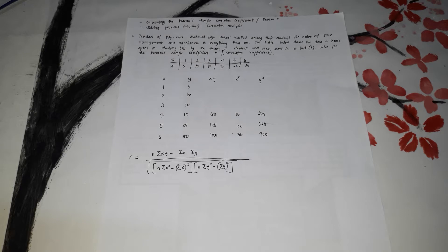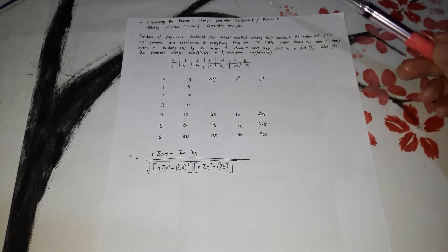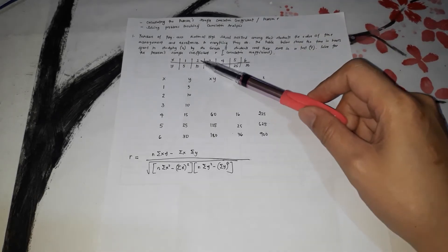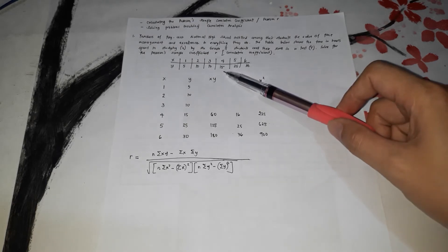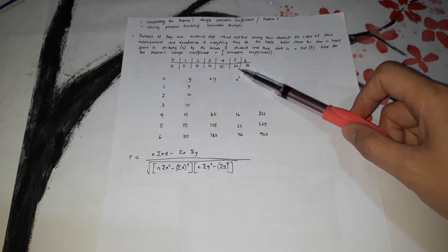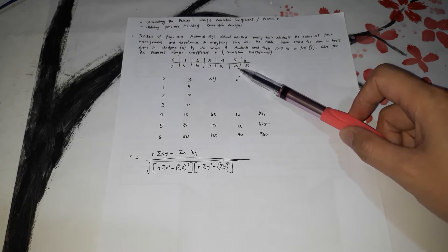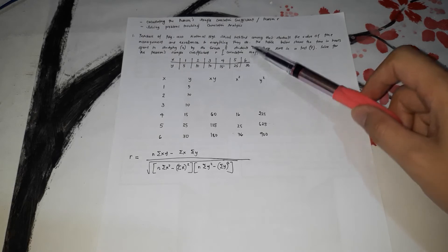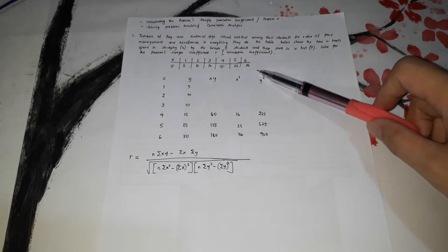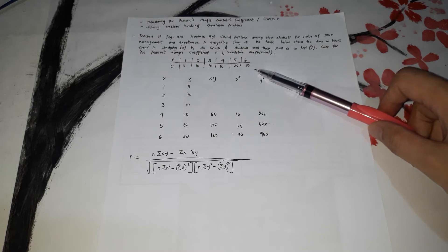For the Pearson's sample correlation coefficient, letter R, these are the scores and the time. X is for the time spent in studying. If it is 1 hour, the score is 5. For 2, it's 10; for 3, 10; for 4, 15; for 5 hours of studying, the score is 25. One student studied for 6 hours and got 30 points in the test.